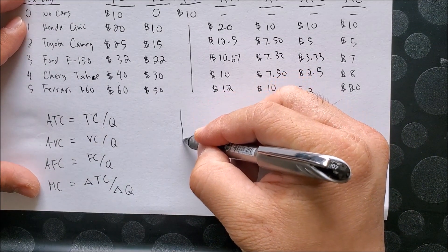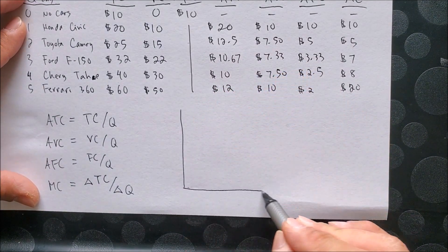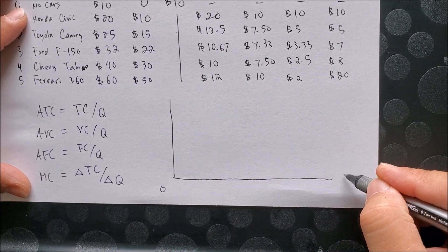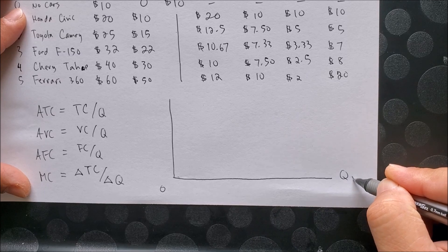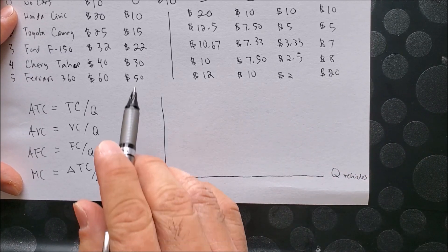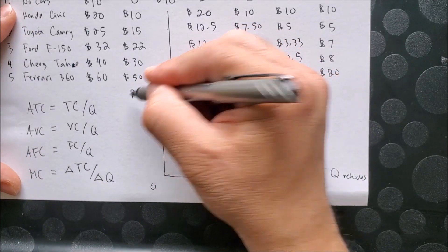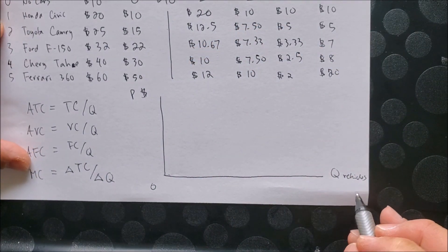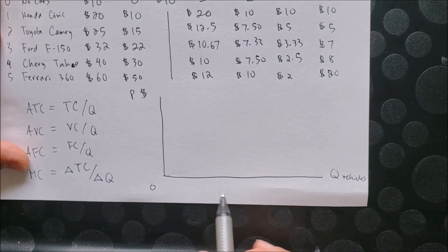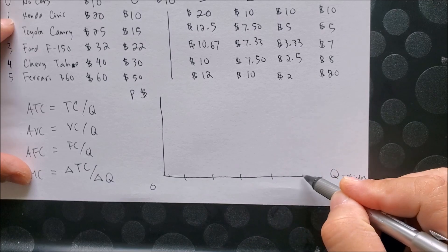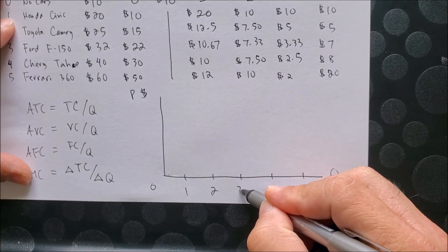So if we do that, we can go ahead and draw our graph as such, where on the x-axis we're going to have the quantity, in this case vehicles, and on the y-axis we're going to have the price in dollars. So the simple thing that we have here is we have vehicles from 0 to 1, 2, 3, 4, 5 vehicles.